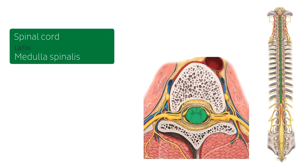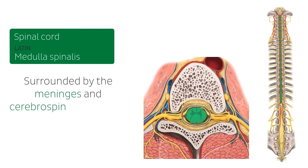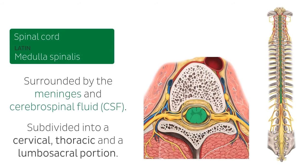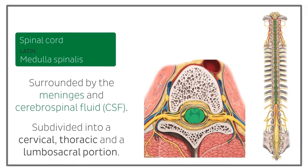It is surrounded by the meninges, which we will be discussing later on in this tutorial, and cerebrospinal fluid. It consists of grey and white matter and it can be subdivided into a cervical, thoracic and a lumbosacral portion, with spinal nerves arising from each region.